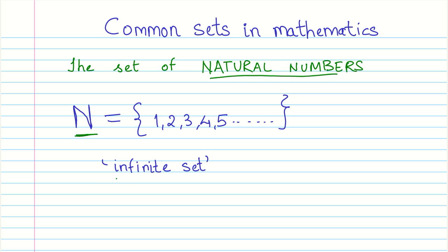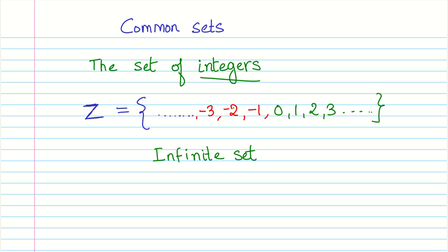The second common set is the set of integers. Integers give us the idea of having negative numbers along with positive numbers and zero. We represent the set of integers by the capital letter Z. The set of integers extends towards infinity on both sides, in the direction of negative numbers and positive numbers, so it is an infinite set.